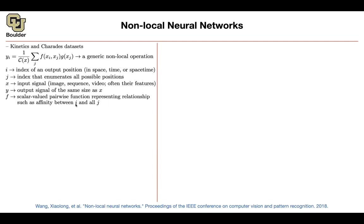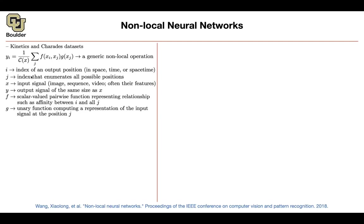Now that we know x, y, i, and j, the question is: what is f? f is scalar-valued — not a vector — it takes two arguments, so it's a pairwise function, and it represents some relationship between position i and position j, such as how much position i is paying attention to position j. g takes only one argument, so it's a unary function; its output could be a vector, and it takes as input the signal value at position j, where x_j could also be a vector. C is a normalization factor.